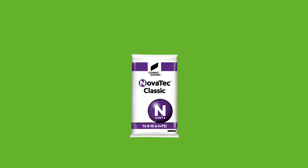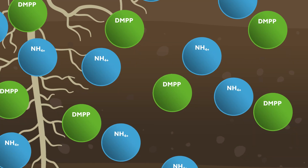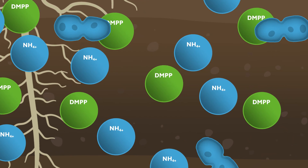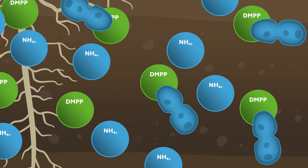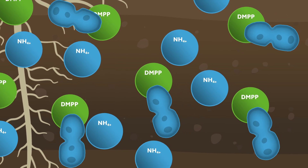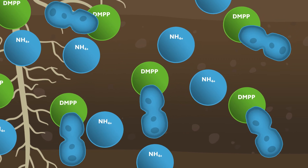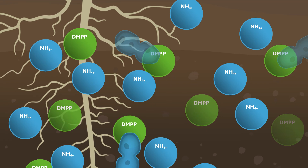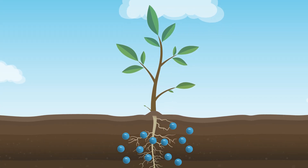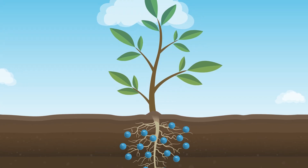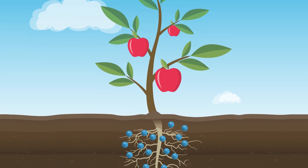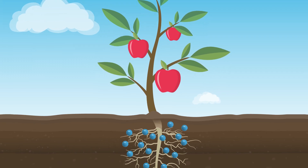What all Novatec products have in common: they are enriched with the active ingredient DMPP, a substance that interferes with enzymatic processes in nitrosomonas. This effectively inhibits the breakdown process. The result — ammonium remains stable. No decomposition products are formed, and the fertilizer remains available to the plant.